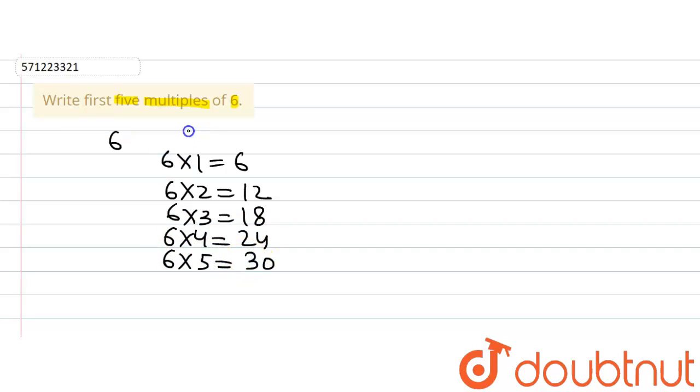So the first five multiples of six are six, twelve, eighteen, twenty-four, and thirty.